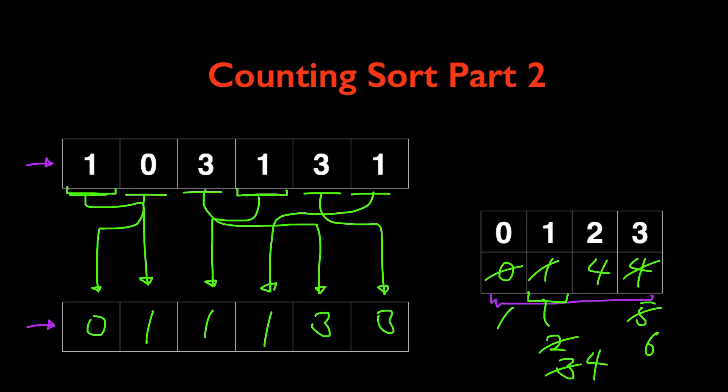Now you might have noticed that this process makes counting sort a stable sorting algorithm. What that means is that if you look at different instances of the same value, for example the number 1.